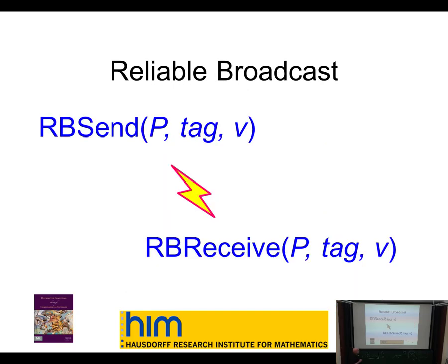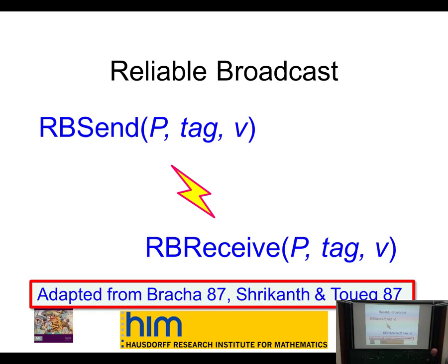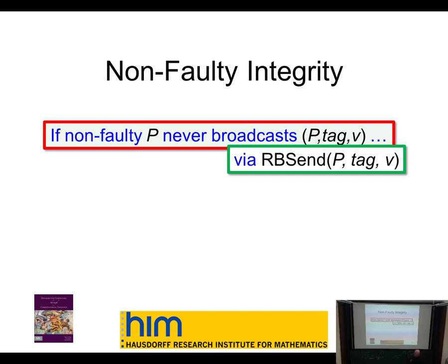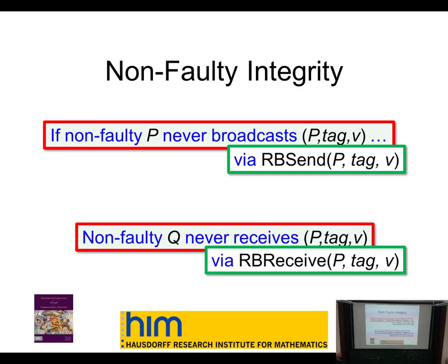I'm going to take this very simple reliable message passing and turn it into something I call reliable broadcast send and reliable broadcast receive, giving you much stronger properties. This is adapted from earlier work — it's simpler than what they did but it's really their idea. The properties we want: if a non-faulty process never broadcasts a message using this reliable send, then a non-faulty process never receives it — so if you're non-faulty and I'm non-faulty, I never think I got a message from you which you never sent.